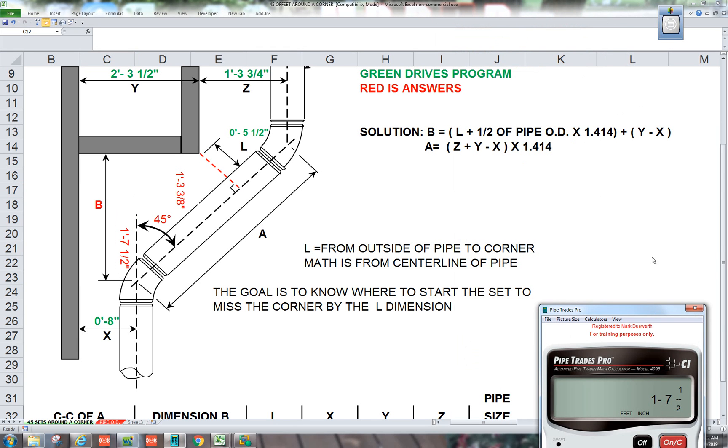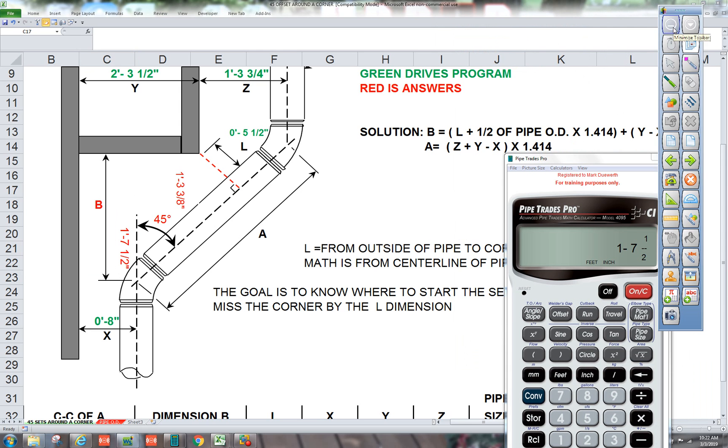Y minus X. So two foot three inch one half minus eight inches gives us one foot seven and a half. So let's draw the triangles in now. Yeah, there's a formula here, but it's triangulations everything in pipe fitting. Let's go over here.